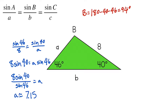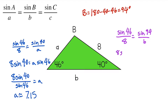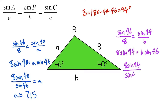Now we can set up our ratio. Same as last time, sine of 46 over 8 is equal to sine of 94 over B, because this angle is 94 degrees. Cross multiplying and solving for B, we get 8 sine 94 equals B sine 46. Dividing both sides by sine 46, B is approximately 11.09.